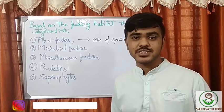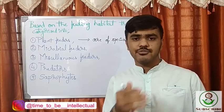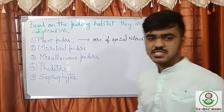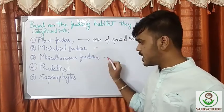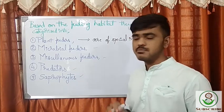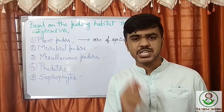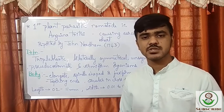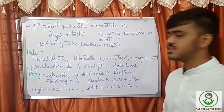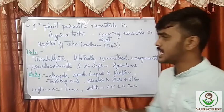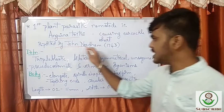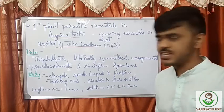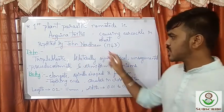Based on their feeding habits, nematodes are categorized into a few types: plant feeders, microbial feeders, miscellaneous feeders, predators, and saprophytes. Plant feeders are of special interest to agriculture. John Needham is one of the greatest scientists in the history of nematodes. The first plant parasitic nematode was Anguina tritici, reported by John Needham in 1743, and it causes ear cockle in wheat.